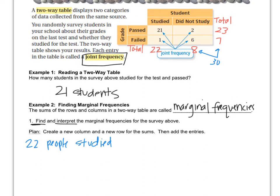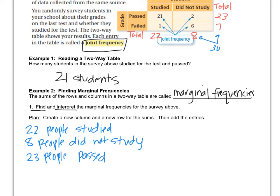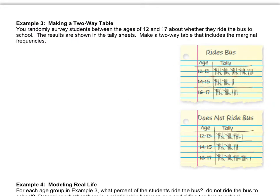The next one is 8 people didn't study. Now we have the other two. There were 23 people who passed, and there were 7 people who failed. Okay, let's move on.